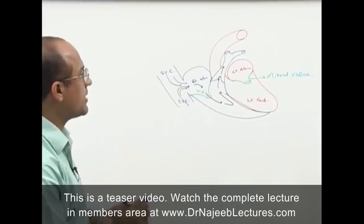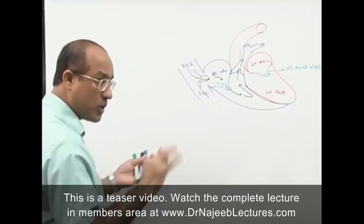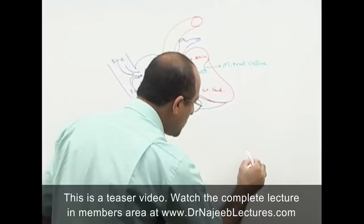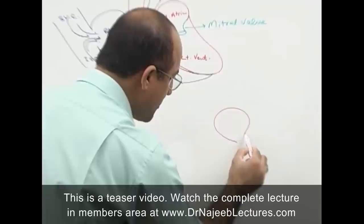Let me draw this component separately. On the left heart: left atrium, mitral valve, left ventricle, with outflow to the aorta. Now I will draw the right heart — input is inferior vena cava and superior vena cava, bringing blood to the right atrium.